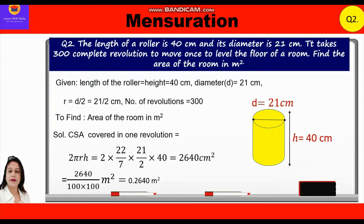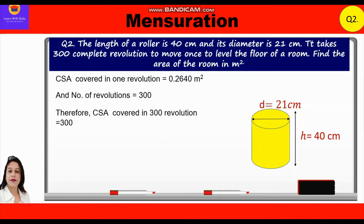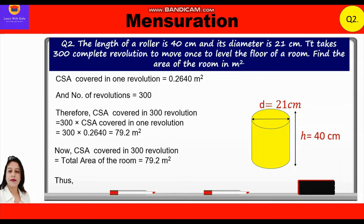The number of revolutions is 300. Therefore, curved surface area covered in 300 revolutions = 300 × 0.2640 = 79.2 m². The curved surface area covered in 300 revolutions equals the total area of the room. Thus, area of the room = 79.2 m².